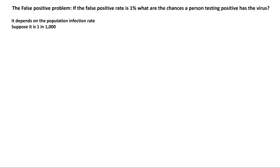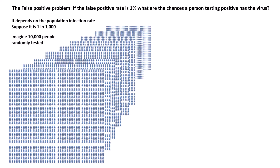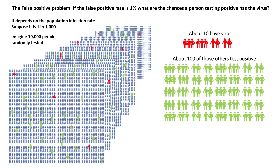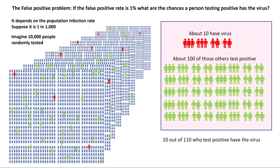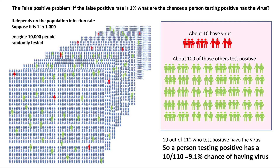Let's suppose that at the time of the test one in every one thousand asymptomatic people really has the virus. So imagine testing 10,000 asymptomatic people — then about 10 really have the virus, and let's assume they all test positive. That leaves just under 10,000 who don't have the virus, and because of the 1% false positive rate about a hundred of those will wrongly test positive. That means out of the 110 in total who test positive, only 10 have the virus. So if you test positive there's actually less than a 10% chance that you have the virus, meaning the vast majority of so-called asymptomatic cases are false positives.